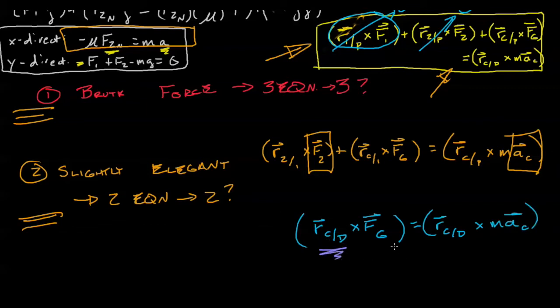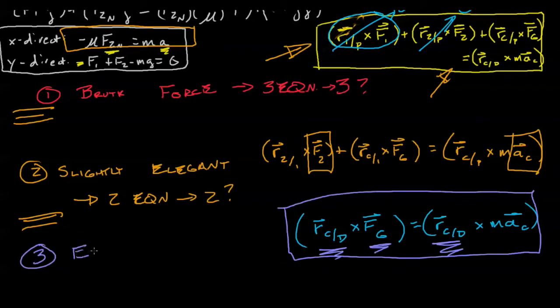We know this from the geometry, we know the force of gravity, we know this from the geometry. We have one equation and one unknown. This is scenario three. This is our best elegant solution. We have one equation, one unknown.